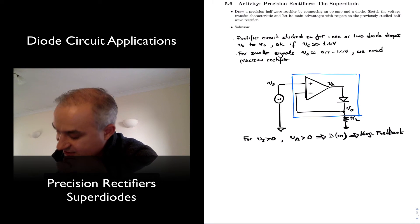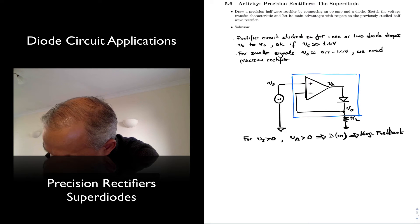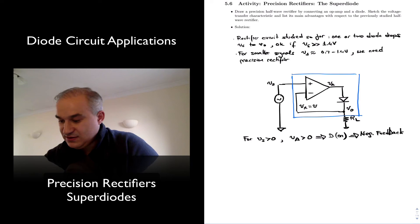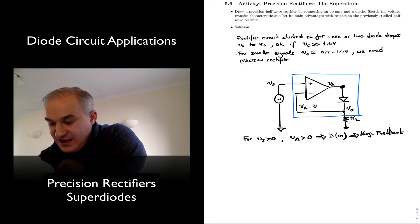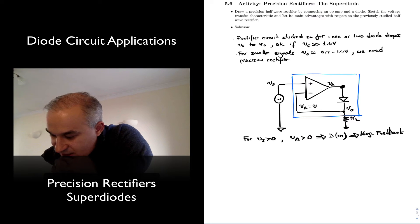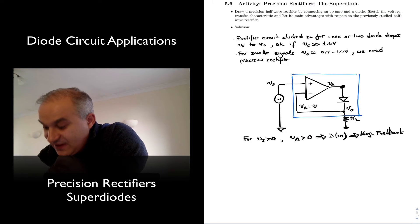And what happens when we have negative feedback? The voltage at the negative input, Vn equals Vp, meaning the operational amplifier adjusts the output, in this case it's VA, so as to make the voltage at both input terminals equal.